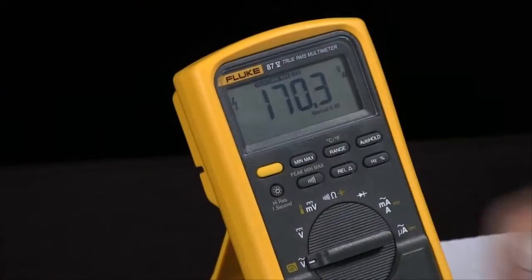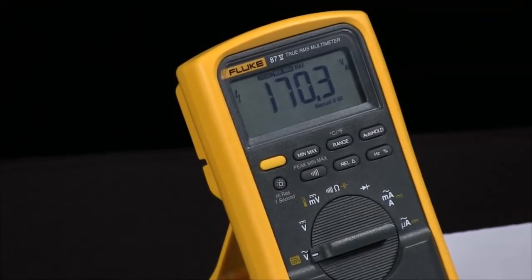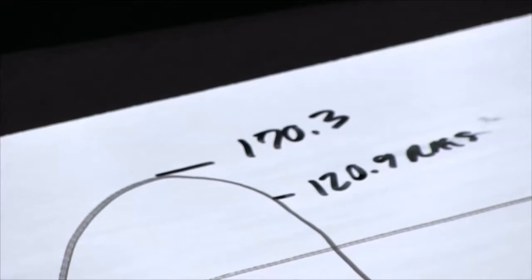By hitting the min-max and then the peak min-max, I put the meter into peak min-max mode, which shows me we have a peak of 170.3.